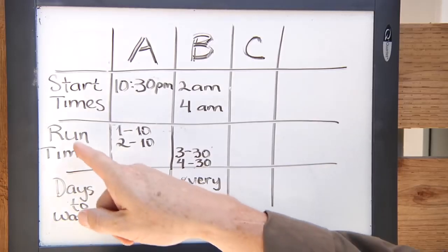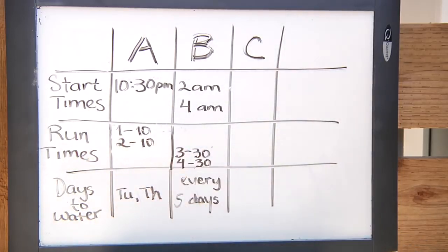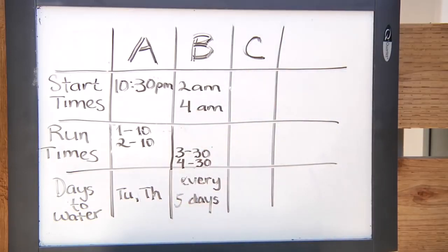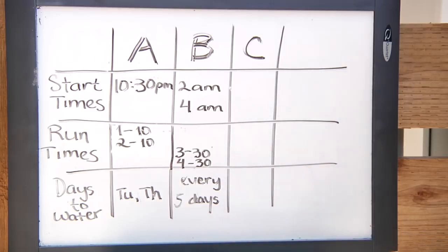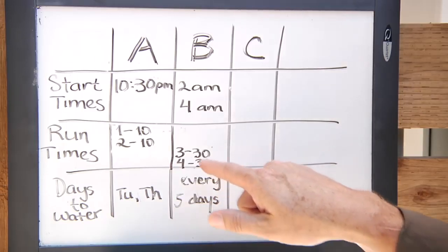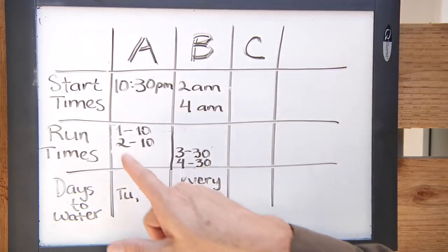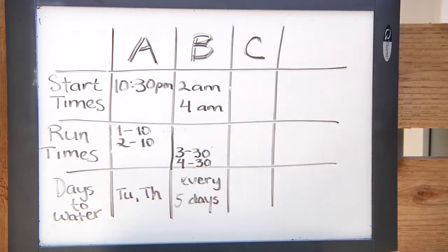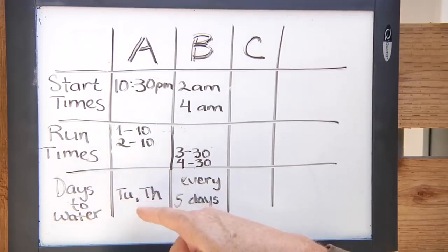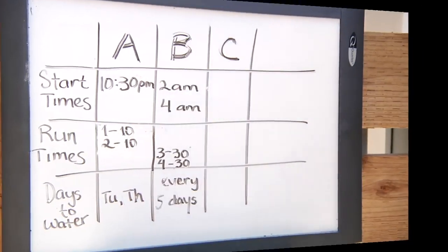We're going to take our run times for individual stations or zones and split them over two programs. The reason is that stations three and four have a different watering day requirement — every five days for the fruit trees. Stations one and two are the grass zones and only water on Tuesday and Thursday. Because they have different day requirements, we're splitting them across different programs.